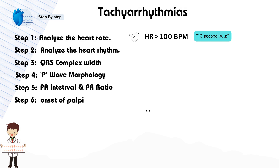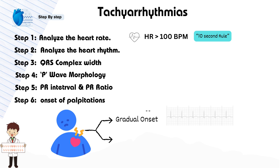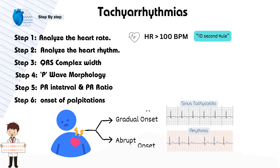Step 6: Check if the onset of palpitations is gradual or abrupt. Gradual onset suggests sinus tachycardia, while abrupt onset suggests an arrhythmia. Imagine a patient describing a sudden and rapid onset of heart palpitations, which could indicate an arrhythmic condition requiring further evaluation.